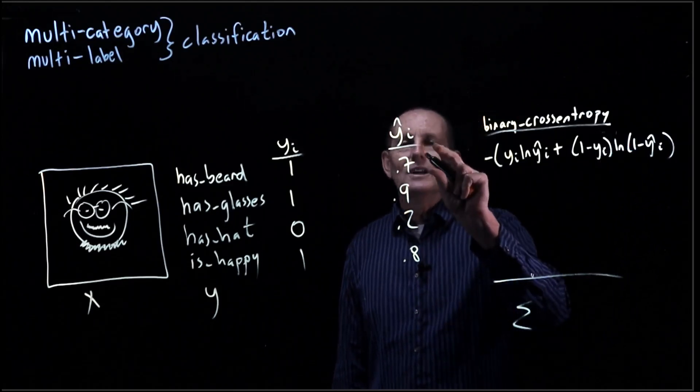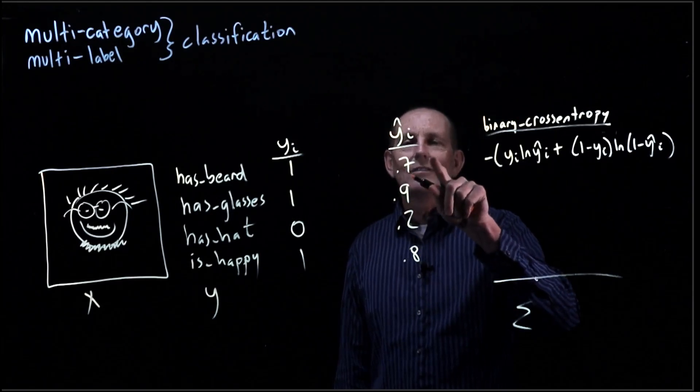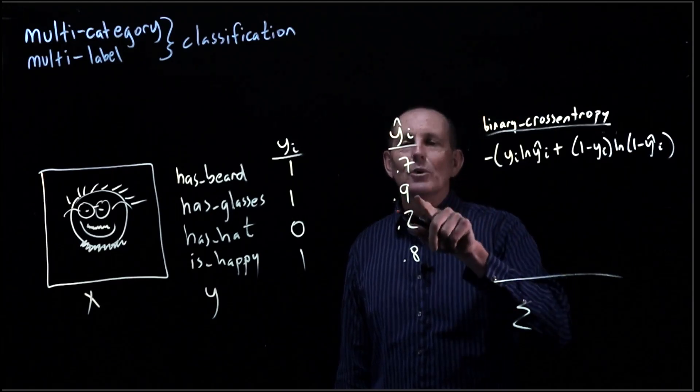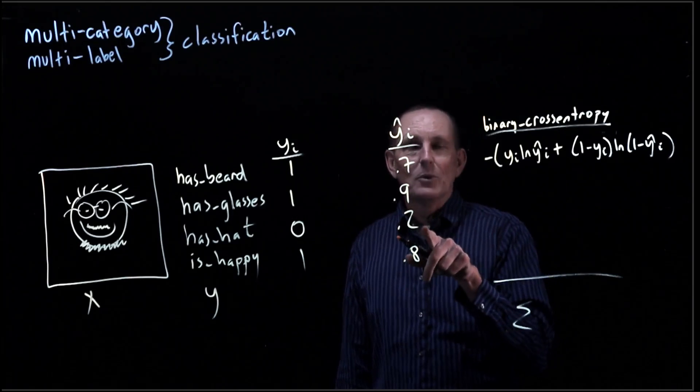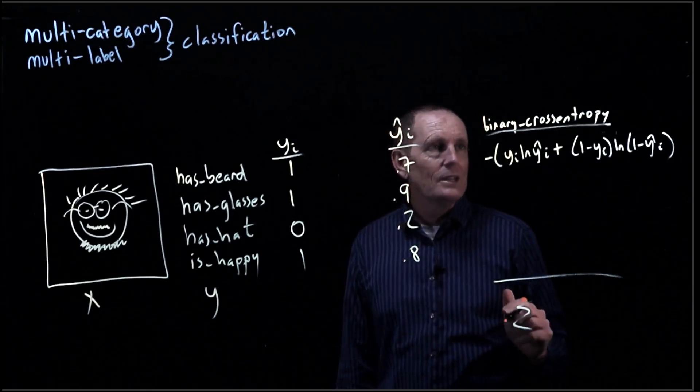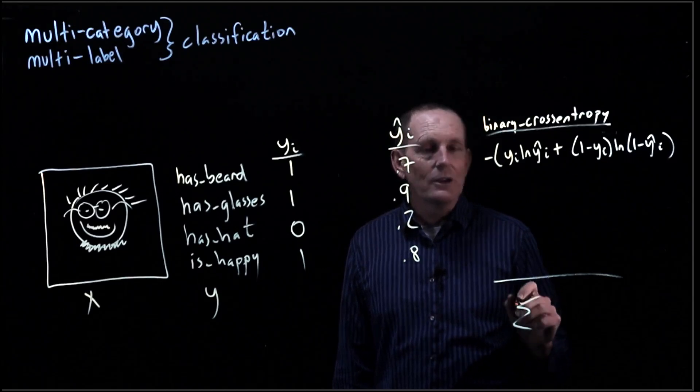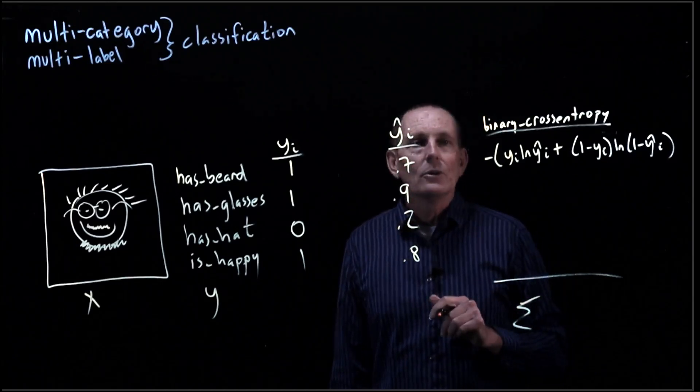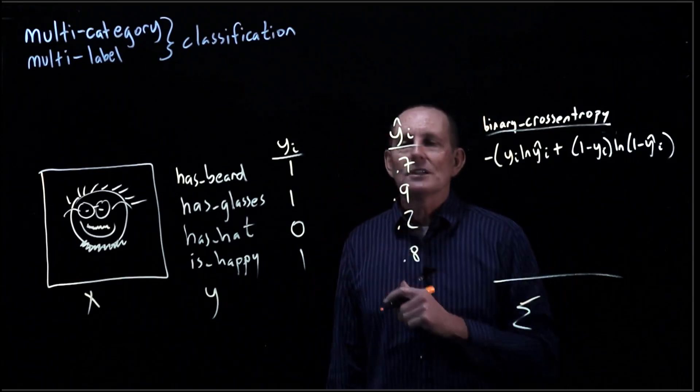So the way we would think of it is, right, this is 0.7 of the way to the true answer, 0.9 of the way to the true answer, 0.8 of the way to the true answer, and 0.8 of the way to the true answer. And so we'll sum up all those binary cross entropies, and that's how we'll get our total loss for this particular value.